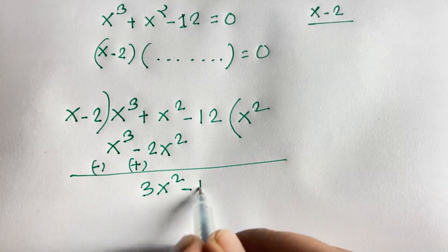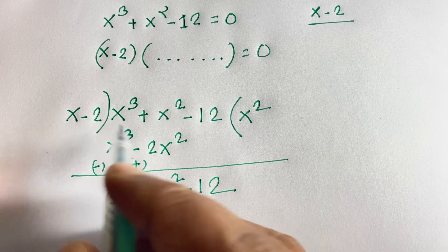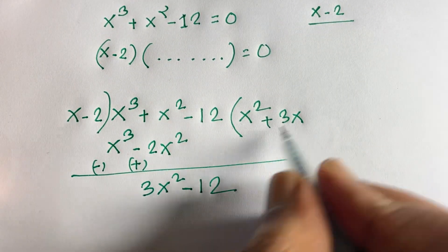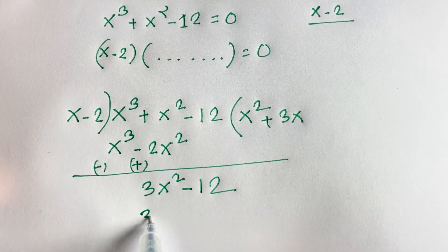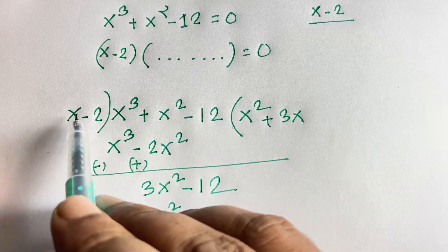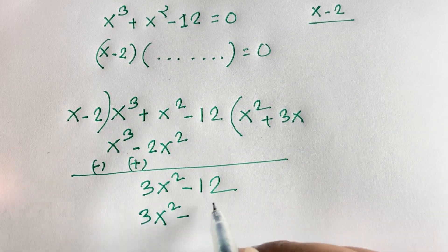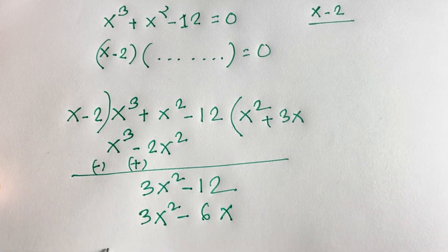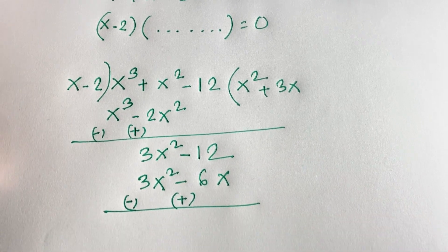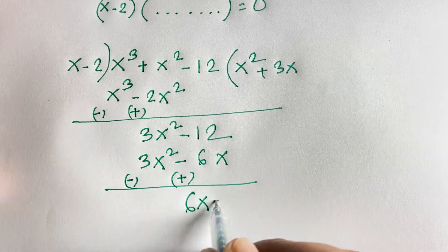And here is minus 12. Now, for 3x squared divided by x minus 2, I take 3x. 3x times x gives x squared, and 3 times 1 gives 3x squared. Then minus 3 times 2 is 6x. Changing the sign and cancelling, we find 6x minus 12.